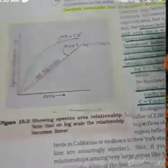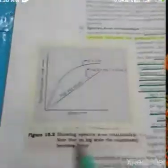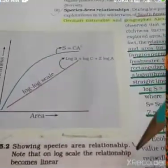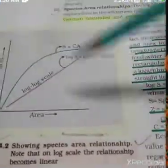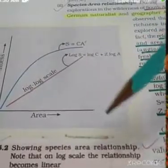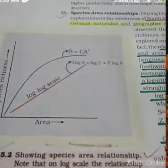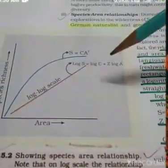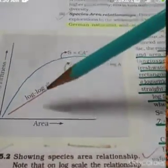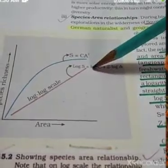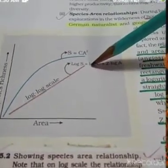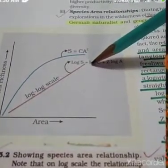The second diagram is 15.2, which is showing the species-area relationship. Note that on a log scale the relationship becomes linear. It is showing two kinds of graphs: the first graph is a straight line, and the second one is a curved line, which represents S = C·A^Z.